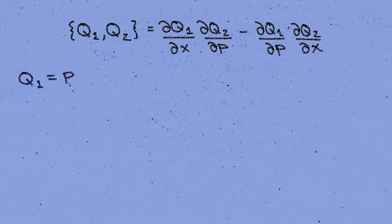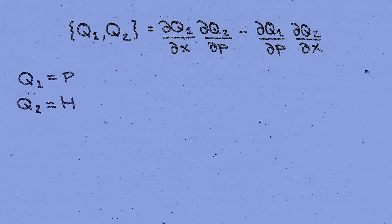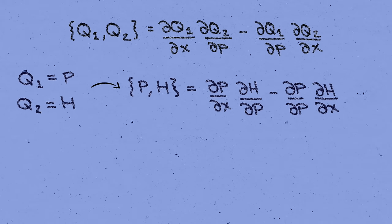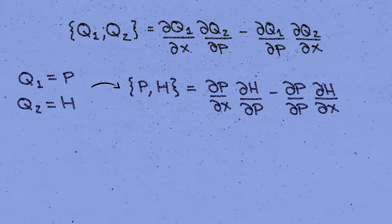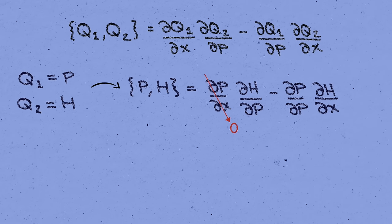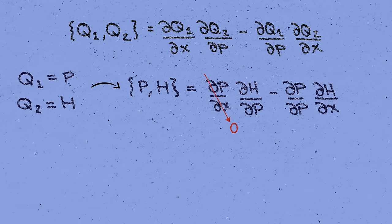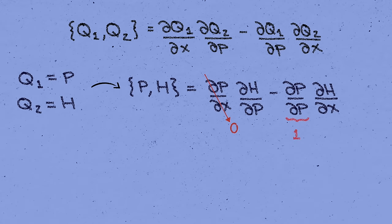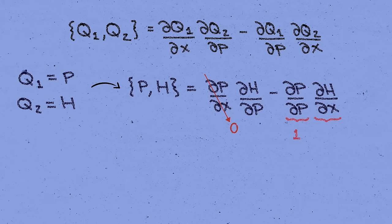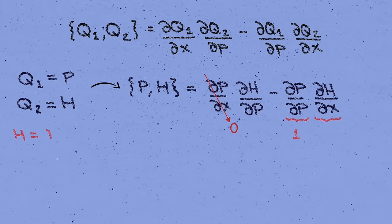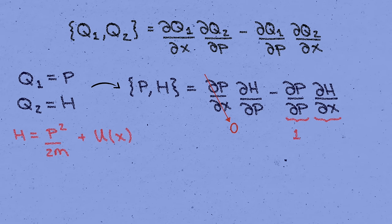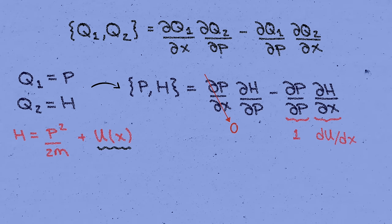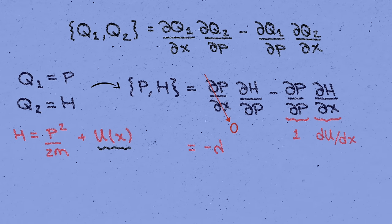Say we let q1 equals p be the momentum and q2 equals h be the Hamiltonian. Then their Poisson bracket is given by dp by dx times dh by dp minus dp by dp times dh by dx. Right off the bat, the first term is zero. p and x are independent variables here, and so the derivative of p with respect to x vanishes. As for the second term, the derivative of p with respect to itself is of course 1, and as for the derivative of h with respect to x, remember that we define the Hamiltonian as h equals p squared over 2m plus the potential u. And so the x derivative only gets a contribution from the potential term, du by dx. Therefore, the Poisson bracket of p with h is equal to minus the slope of the potential.